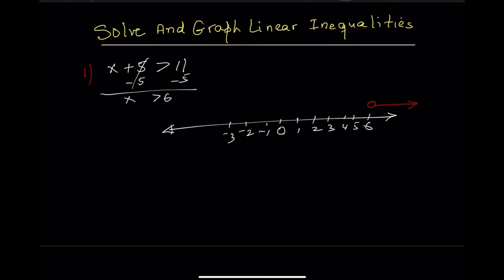Now let's write the answer using interval notation. Since 6 is not included, we use a parenthesis. Infinity is never included, so we also use a parenthesis there. The solution is from 6 to infinity. Interval notation: open parenthesis 6, infinity, close parenthesis.